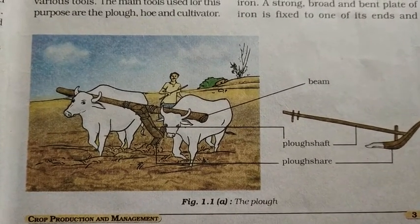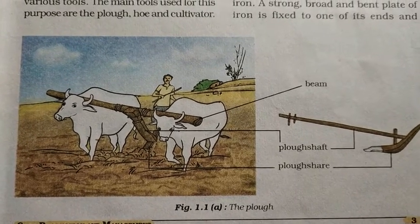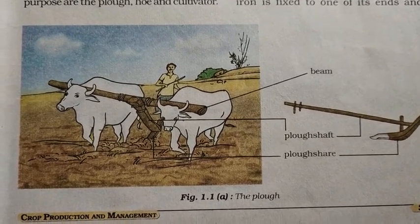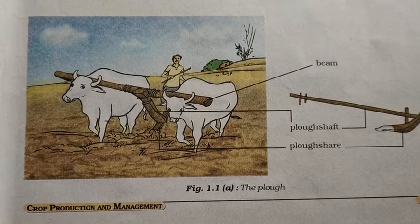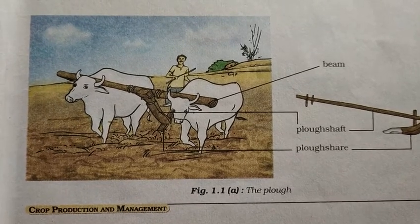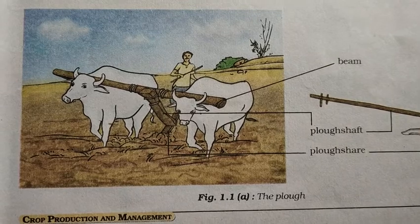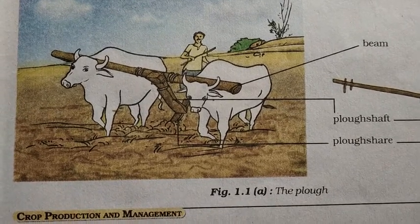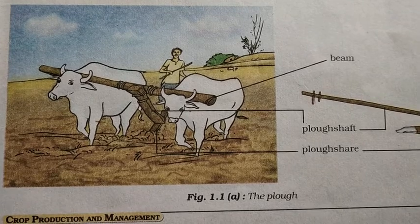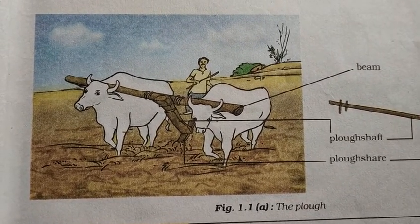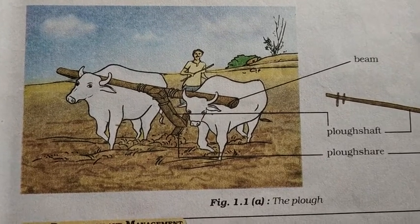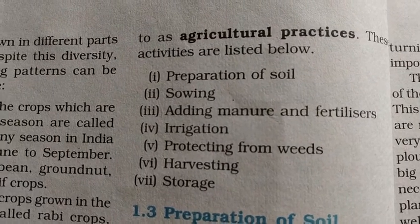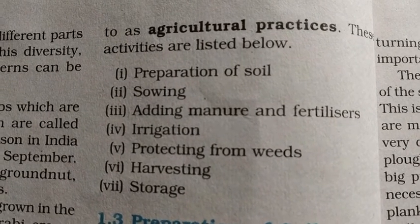To grow these fruits, vegetables, pulses, or grains, some basic agricultural practices are required. The cultivation of crops involves several activities undertaken by farmers over a period of time. These activities — the tasks done by farmers — are called agricultural practices.